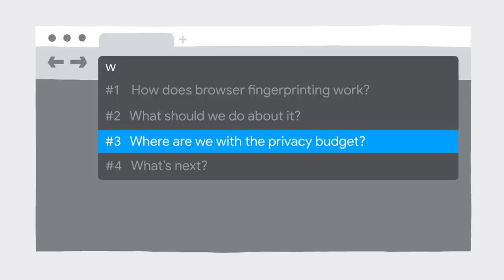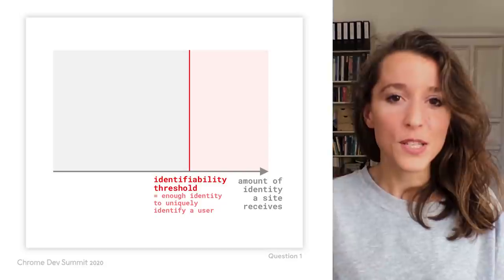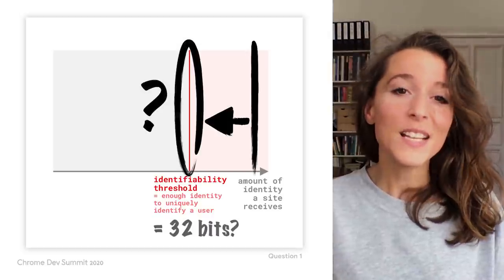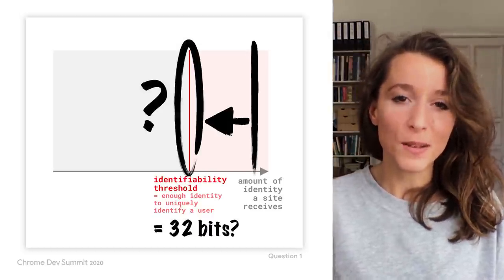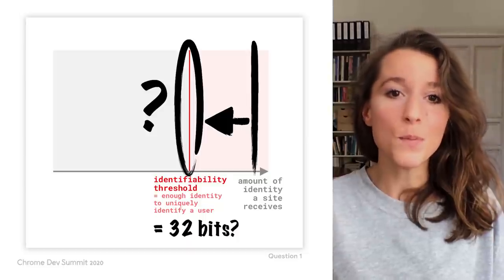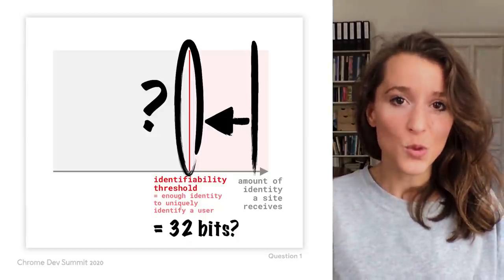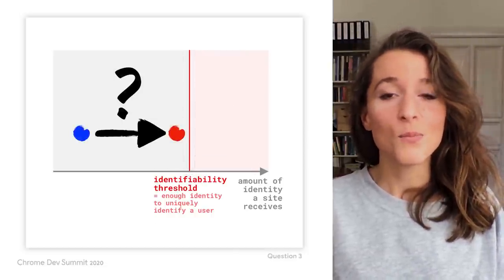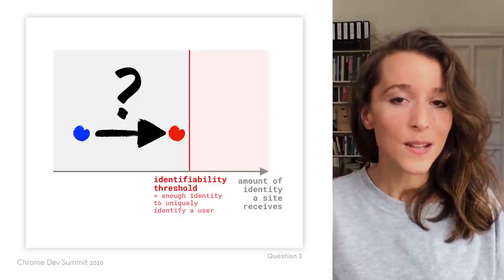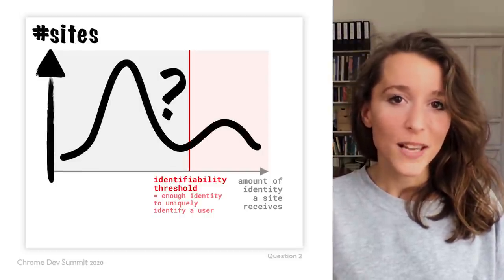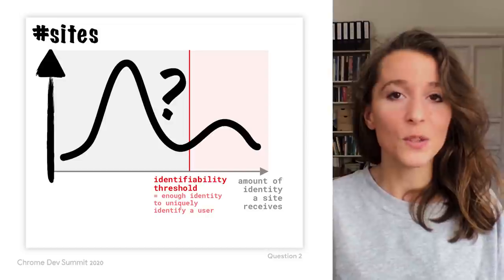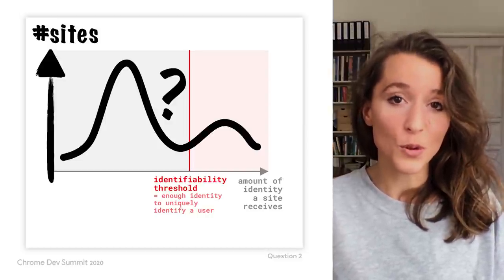Back to the privacy budget — where are we and what's the status? Before the privacy budget can be enforced, some key questions need to be answered. Question one: where is the line? Very likely quite high initially, so we can monitor impact and limit breakage, and then it will gradually move down toward 32 bits — the entropy needed to uniquely identify a web user. Question two: which sets of APIs move your site closer to the line, and by how much? And question three: today, how many sites are above or below the line? We are hoping that most sites are already below, so that privacy budget enforcement only affects a small number of sites.